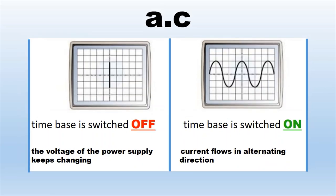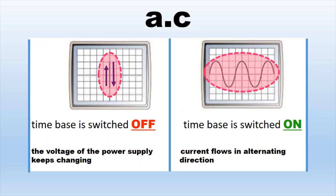For alternating current, when the time base of the CRO is switched off, the light spot moves up and down to produce a vertical trace on the screen, showing that the voltage keeps changing. When the time base is switched on, the graph on the display screen shows a continuous change in the direction of current flow and the voltage of the AC.